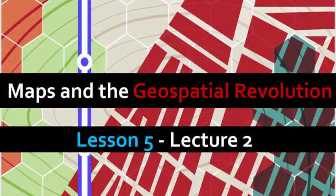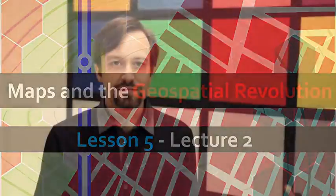This is lecture two for lesson five. Let's talk about colors on maps. Colors on thematic maps should really correspond to the types of data you're trying to show. So do you have numerical data, or do you have categorical data?